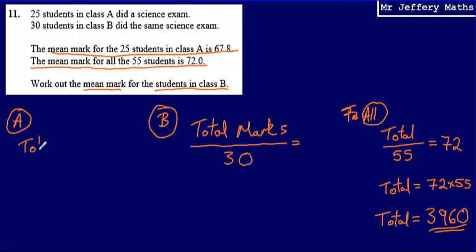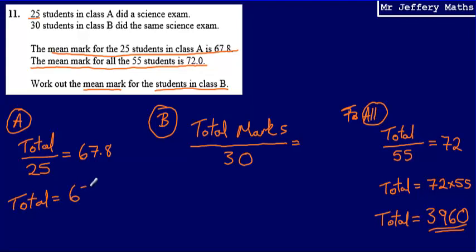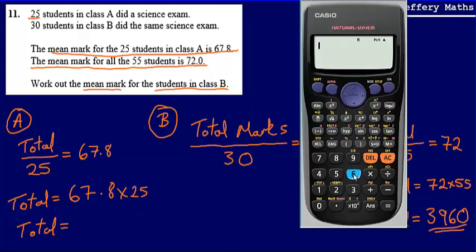The total for class A divided by 25 — because there were 25 students in class A — gave an answer of 67.8. So total divided by 25 equals 67.8, meaning the total is 67.8 multiplied by 25. The total number of marks scored by all students in class A is 67.8 multiplied by 25, which gives 1,695.